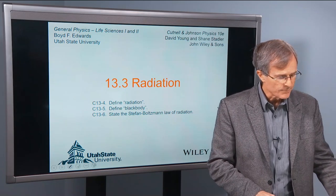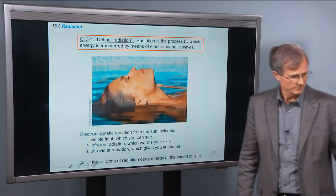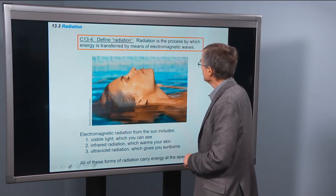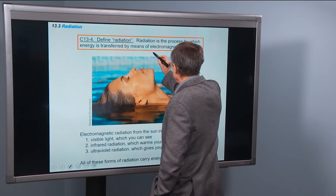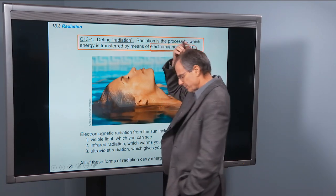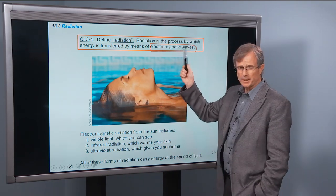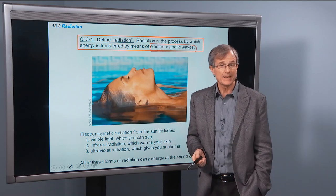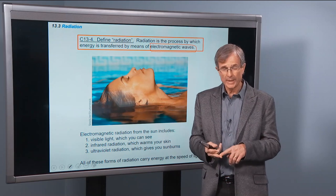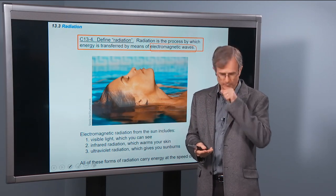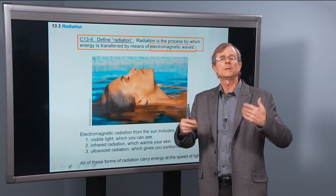A third is radiation, transfer of heat by radiation, extremely fast. Radiation is the process by which energy is transferred by means of electromagnetic waves. We will talk about electromagnetic waves next semester. They travel at the speed of light, all electromagnetic waves do. Light, infrared radiation which is heat, ultraviolet, radio waves - all travel at the speed of light. The only difference between them is their wavelengths.